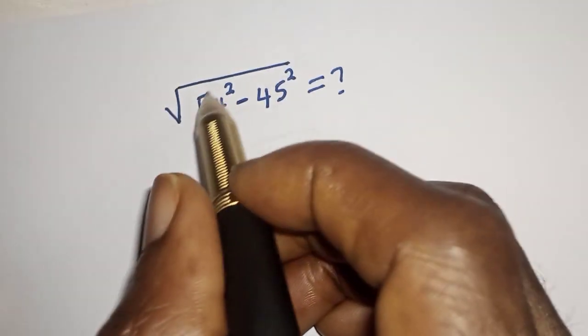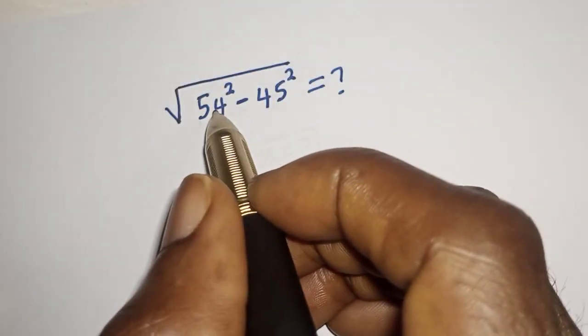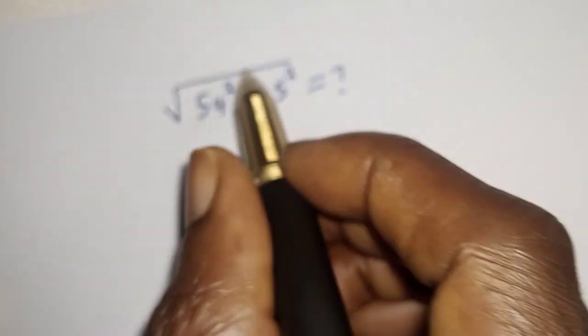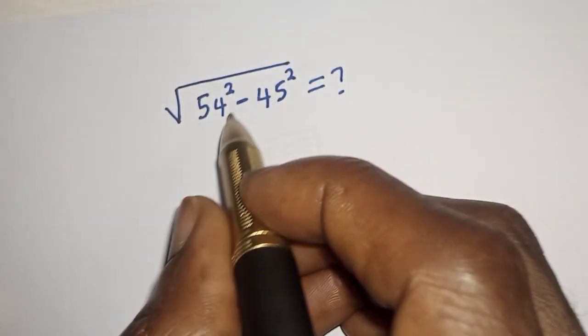Hello, welcome to Magist. In this class, I want to simplify this nice radical problem: square root of 54 squared minus 45 squared.